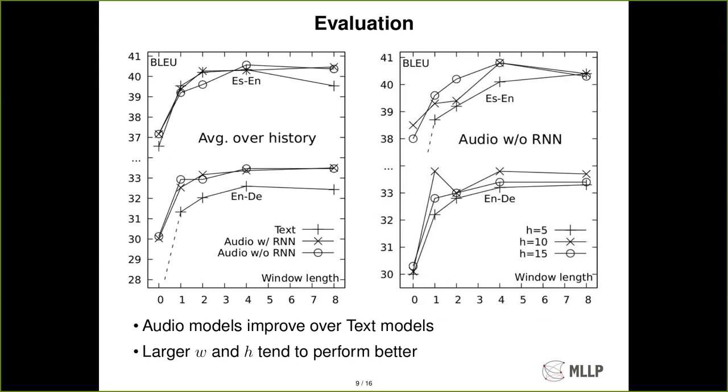Here we have a brief snapshot of the different experiments. On the left we have the average BLEU over the different history sizes where we compare the text model versus the audio models depending on their window length and you can see how the audio models perform better than the text models. On the right we focus on the audio models, you can see the different effects of the history size. Overall, taking into account what we have learned from these experiments we get that audio models improved over text models and that larger window and history sizes tend to perform better. So we selected for the following experiment a window size and history size 10 since they tend to have a good quality-latency trade-off.